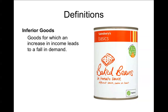Inferior goods are goods for which an increase in income leads to a fall in demand. A good example is Sainsbury's basic baked beans — the cheapest ones on offer. Generally, if you have higher income you're going to switch your consumption away from these sorts of goods and focus on other normal goods instead.